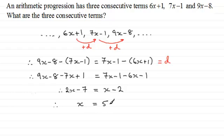So I've now got what x is, and I should be able to find each of the three terms. So therefore, we can say that the terms are, and when we let x equal 5 for the first term, you've got 6 times 5, which is 30, plus 1, 31. And then substituting 5 into the second term here, 7x of 35 minus 1 gives us 34. And the next term, substituting 5 in, 9x of 45 minus 8 is 37.